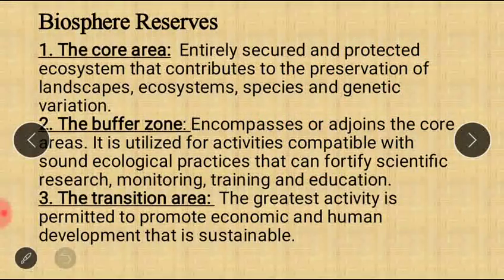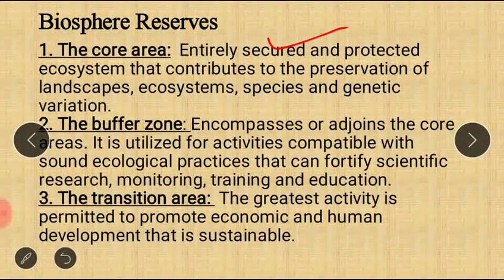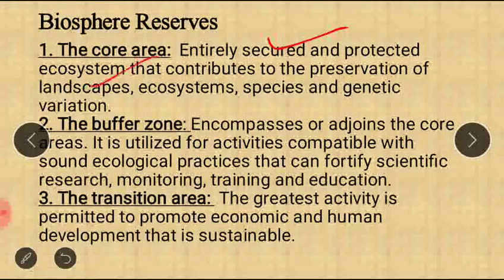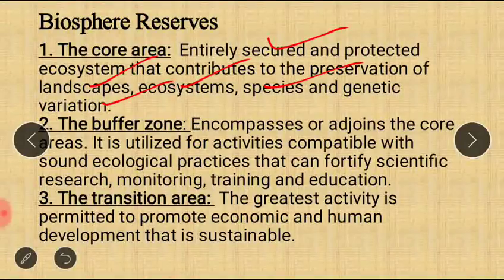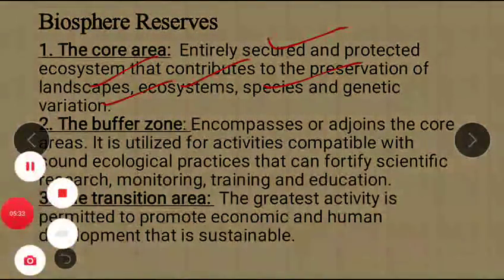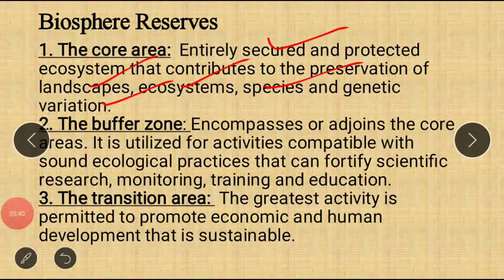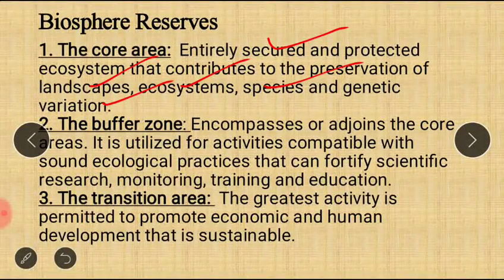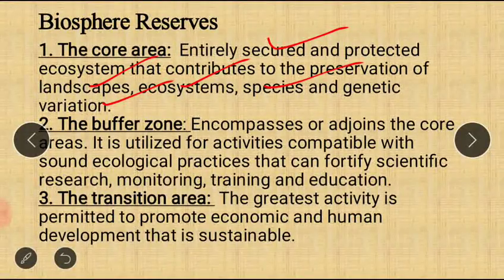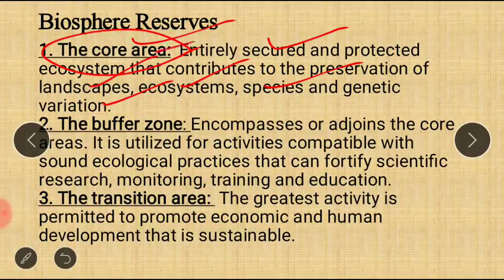The Core Area is an entirely secure and protected ecosystem. It contributes to the preservation of landscape, ecosystems, species, and genetic variation. The core area resembles a national park — the area is entirely secure, protected, and preserves ecosystems, landscapes, and species.